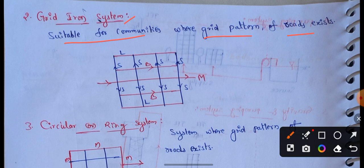In the grid-iron system, mains, sub-mains, and branches are interconnected with each other. Main lines run through the center of the area. The grid-iron system is suitable for well-planned cities.